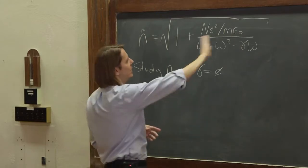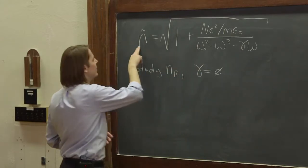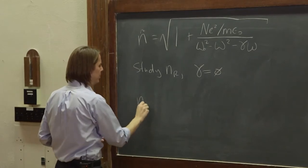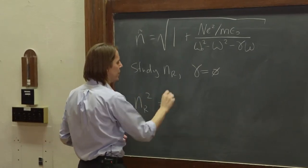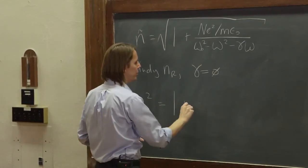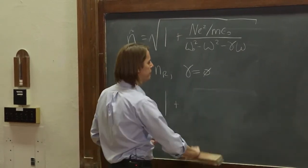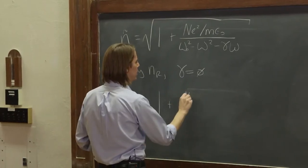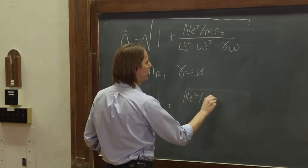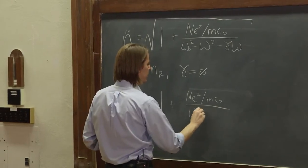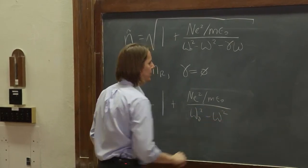All right. So if we make that assumption, then this is all real, we just have nR, and without much of a problem, we can just write nR squared. We've squared it now, so it's 1 plus nE squared over m epsilon naught over omega naught squared minus omega squared.